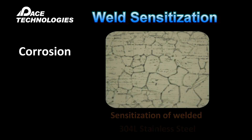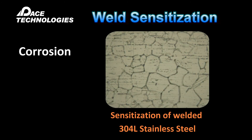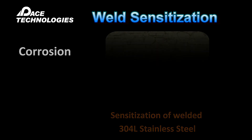Sensitization is a condition where the chromium in an alloy becomes depleted through the formation of chromium carbide at the grain boundaries. For welding, this occurs due to slow heating and cooling through a temperature range specific to the alloy being welded. For example, 300 series stainless steel forms chromium carbide precipitates at the grain boundaries in the range of 425 to 475 degrees C.